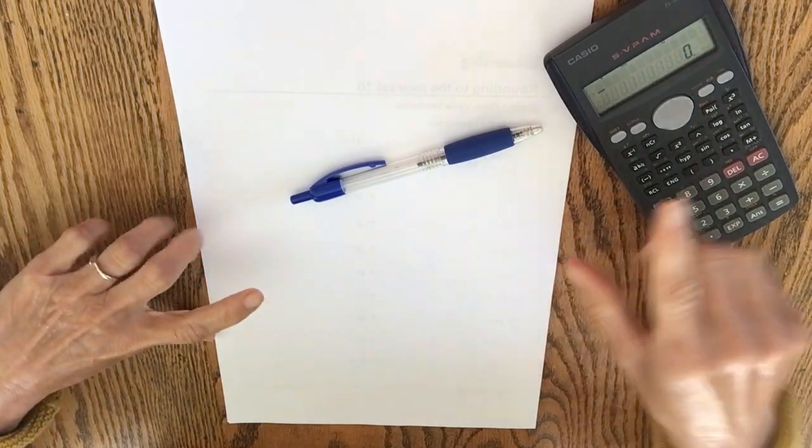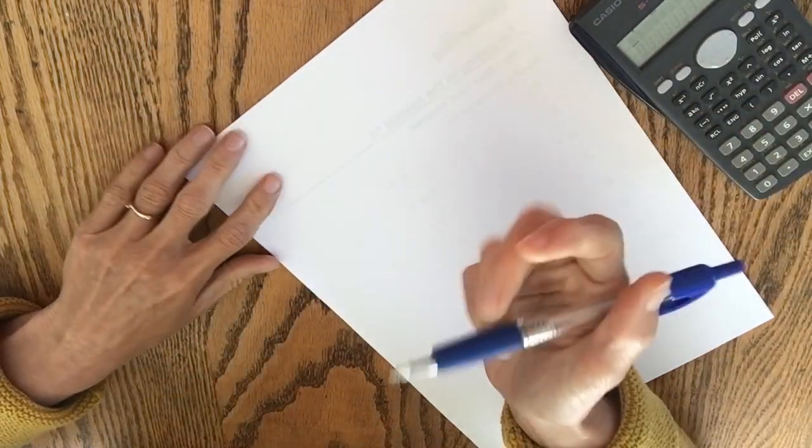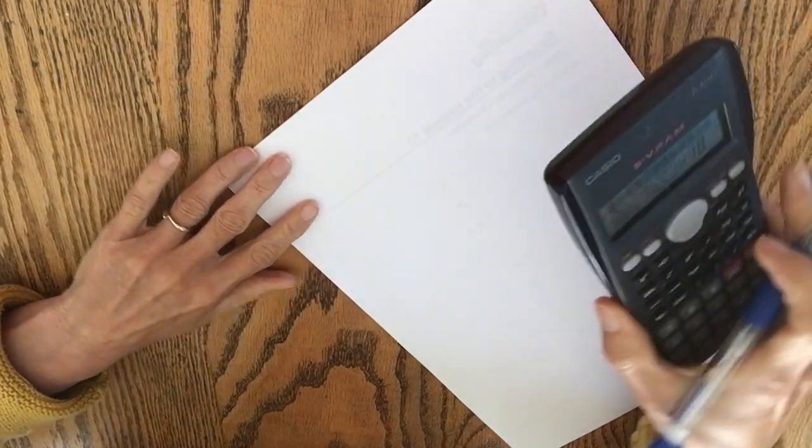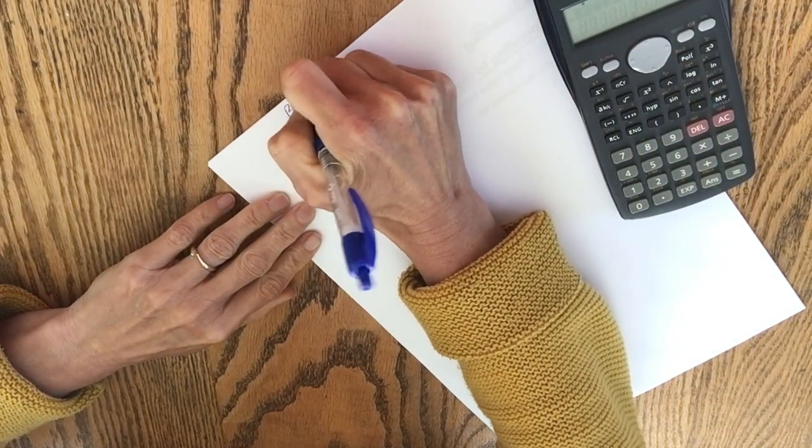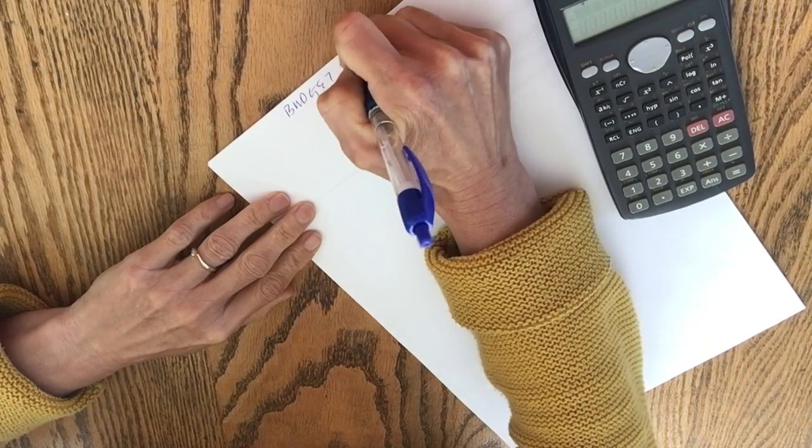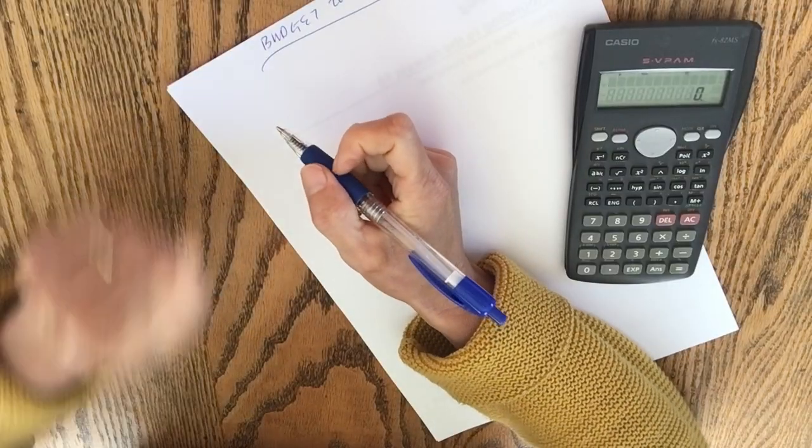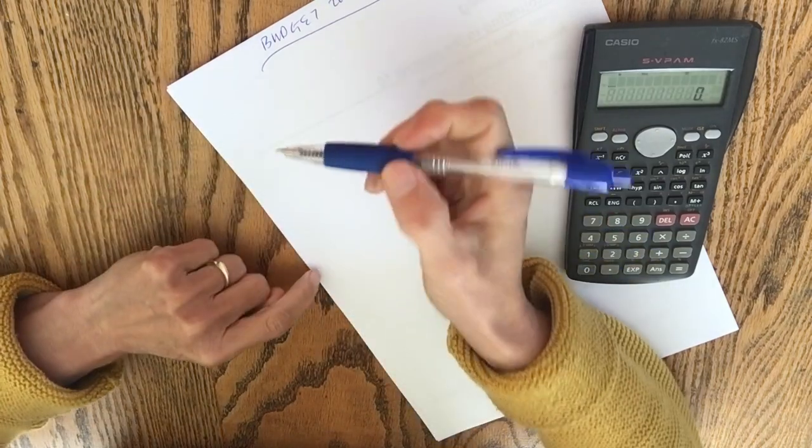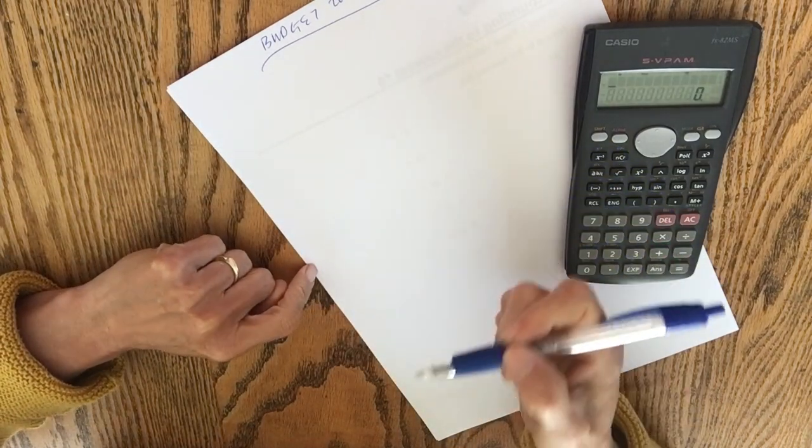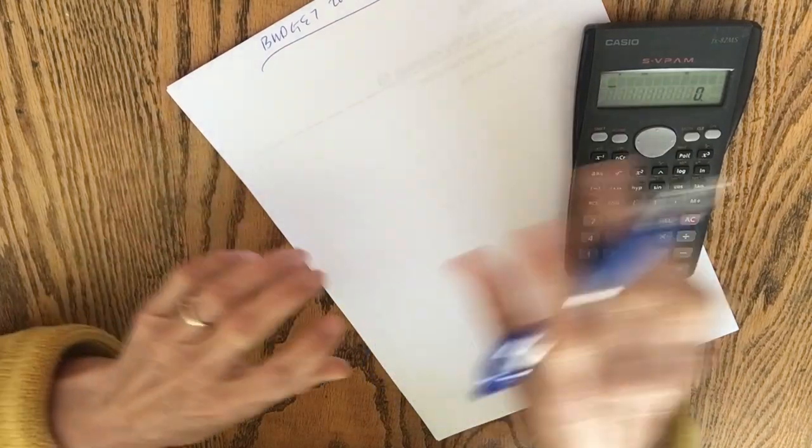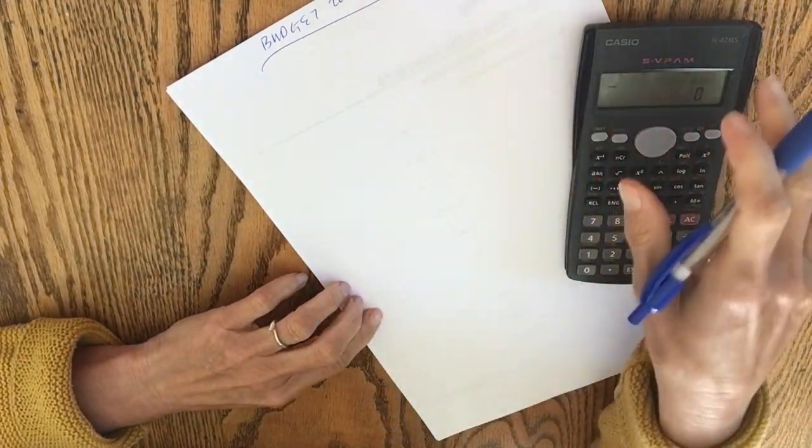So let's get cracking and write this budget. So what I'm going to do to start off with is I've got a scrap piece of paper, a pen, I've got a calculator here as well. So I'm just going to label it budget 2024. The first thing I do is I go through our bank account and have a look at the areas where we're putting money into. Like what are we putting money into each week?